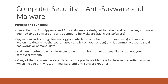The next two pieces of utility software which aid in computer security are very similar to the antivirus program: anti-spyware and anti-malware programs. They are designed to detect and remove any software deemed to be spyware or malware — which means malicious software — on your computer. Spyware can include things like keyloggers, which detect the buttons you press on your keyboard, and mouse loggers to determine the coordinates of your clicks on screen, traditionally used to steal passwords and personal data. Malware is software which looks genuine but can be used to destroy files or disrupt your computer system.